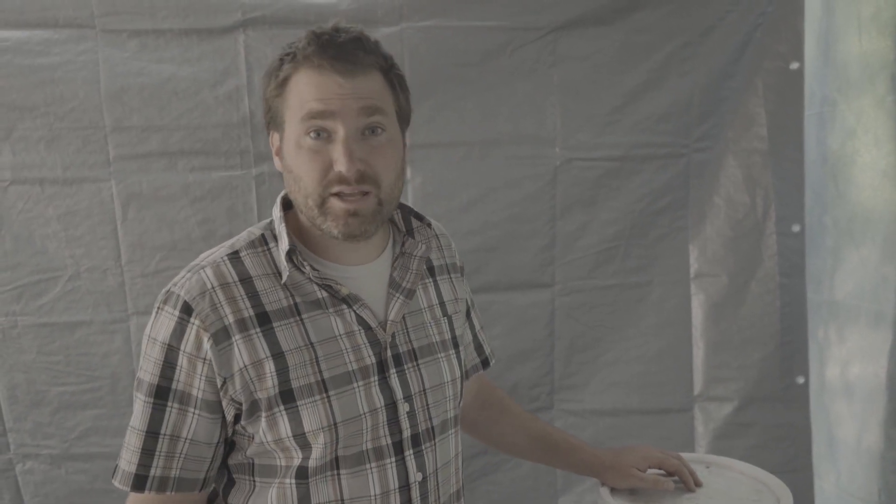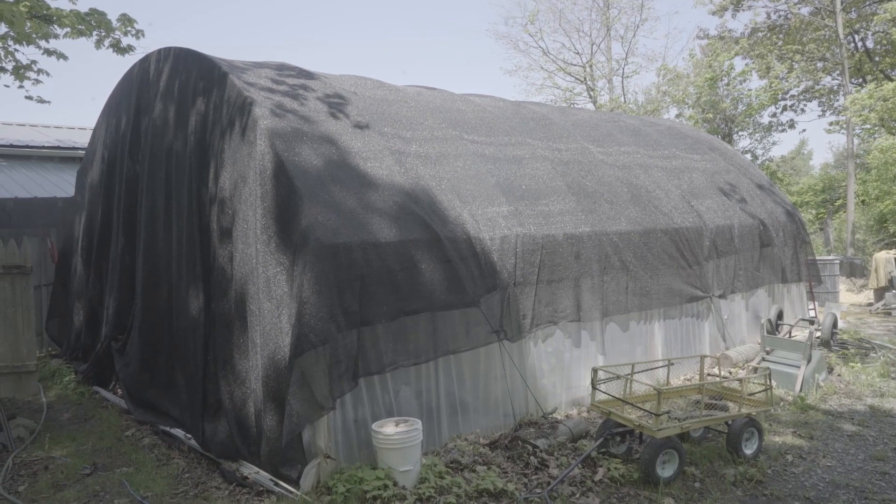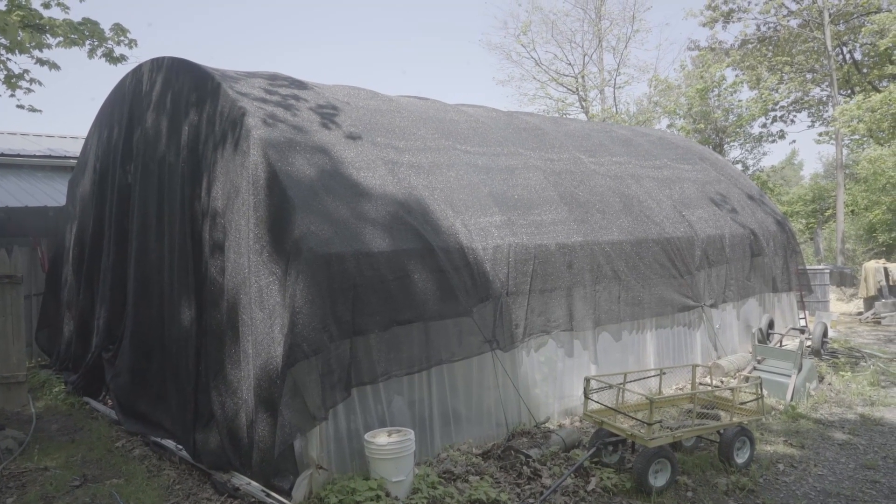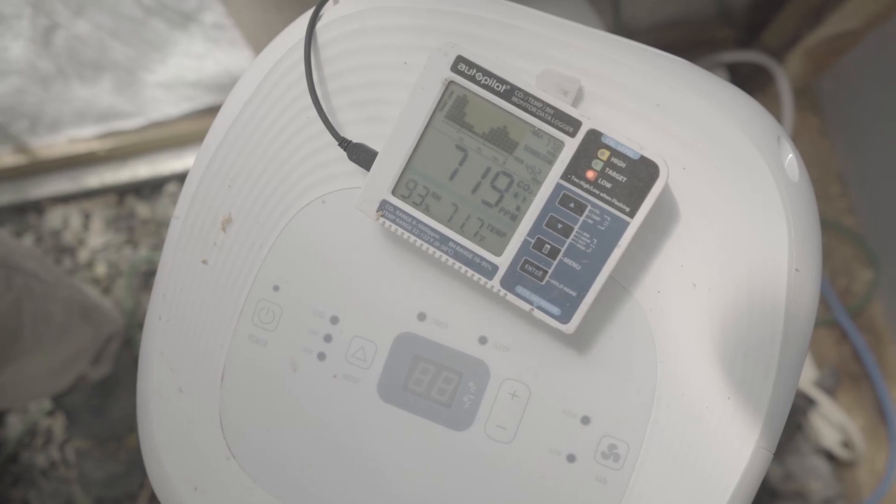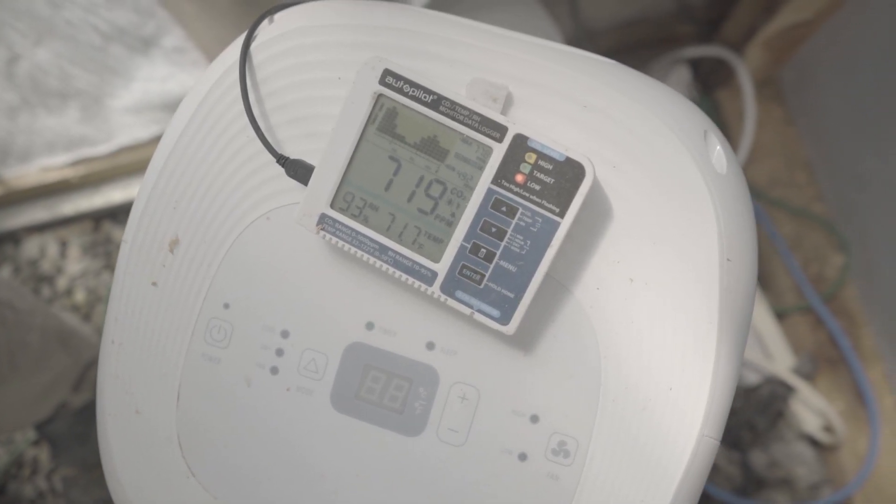Light, we want to keep it nice and dim, not any direct sunlight or light hitting the mushrooms. And then temperature, it's going to depend a bit on what we're fruiting. Right now we're fruiting these blue oysters and those like it around 65, 70 degrees.